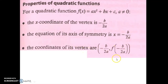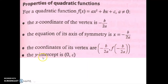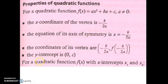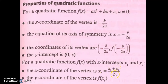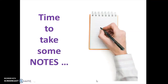The coordinates of the vertex are found by using negative b over 2a for the x value, then substituting that into the function to get the y value. The y-intercept of any standard form quadratic is 0, c — so the c value tells us the y-intercept directly. For a quadratic with x-intercepts x1 and x2, another way to find the vertex x value is to add the two intercepts and divide by 2, finding the midpoint between them due to symmetry.